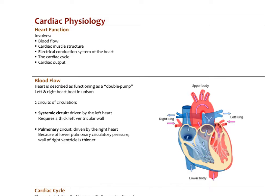To understand the physiology of the heart, we have to look at the blood flow through the heart, the structure of cardiac muscle, the electrical conduction system of the heart, something called the cardiac cycle, and then the concept of cardiac output. So we need to look at all these different features.